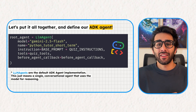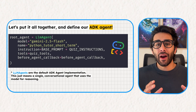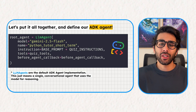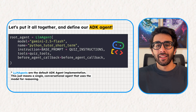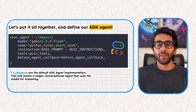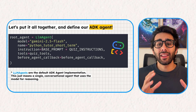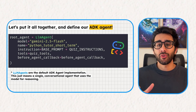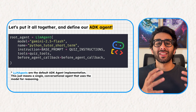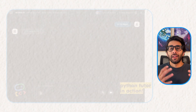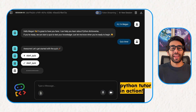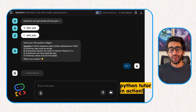We put all of these pieces together and define our agent using the LLM agent function provided by ADK. As you can see, we're passing in the model, the system prompt, and the list of tools we created before. This function wraps everything up into a single conversational agent. And voilà, we've created a simple AI agent that can teach us Python.